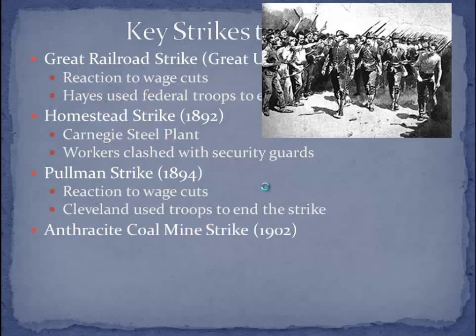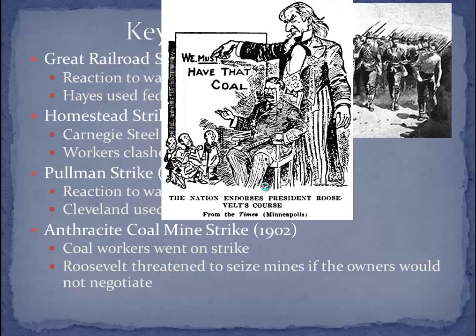Another strike occurred in 1902 under President Theodore Roosevelt — the anthracite coal mine strike. Coal workers went on strike and the mine owner refused to negotiate. Roosevelt got involved and told the owner he would seize the mines if he did not negotiate with the workers. This is really the first time the government did not side against workers. The previous three — Great Railroad, Homestead, and Pullman — all saw the government side against workers. The anthracite coal mine strike is unique, so remember: when in doubt, the government sides against workers, unless it is Teddy Roosevelt and the anthracite coal mine strike.